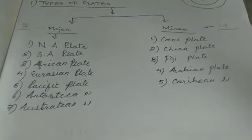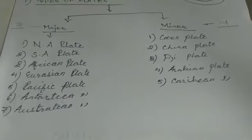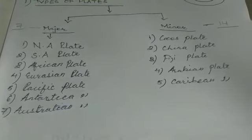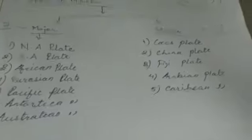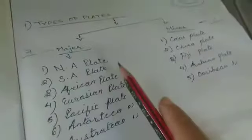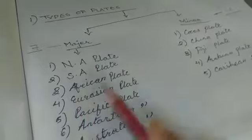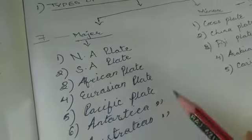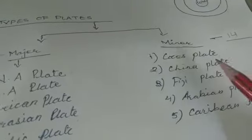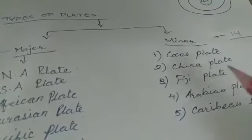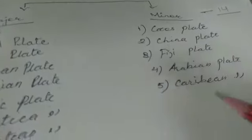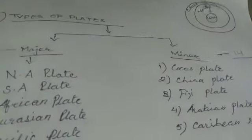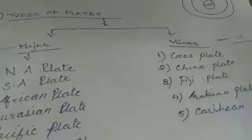There are seven major and fourteen minor plates in our earth's crust. The major plates are the North American, South American, African, Eurasian, Pacific, Antarctic, and Australian plates. The minor plates include the Cocos, China, Fiji, Arabian, and Caribbean plates, among others.